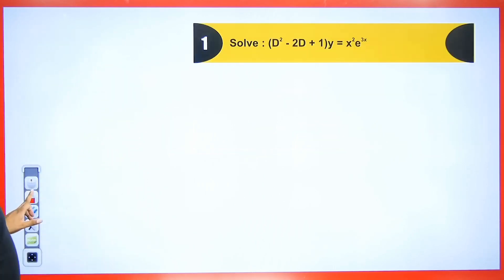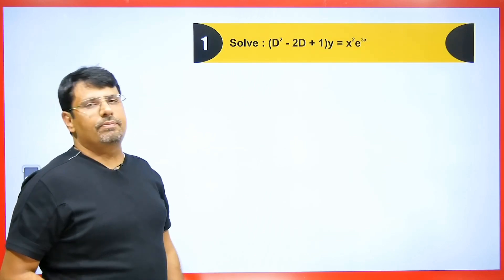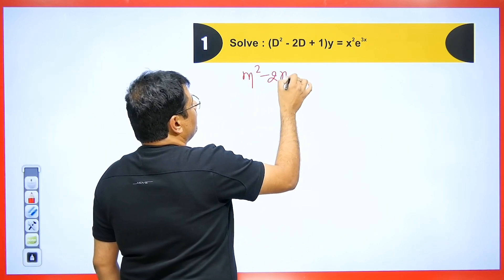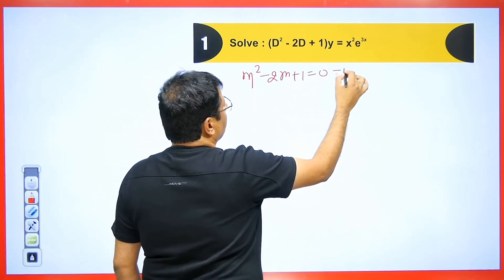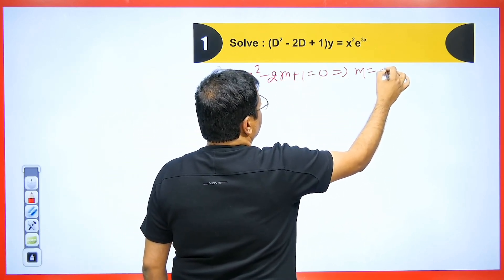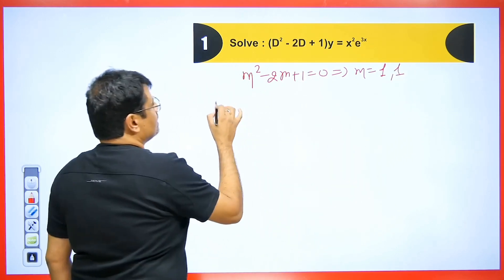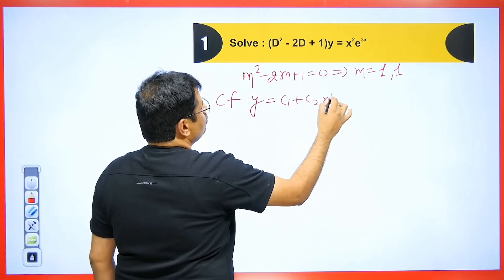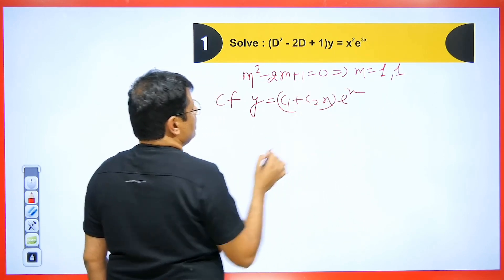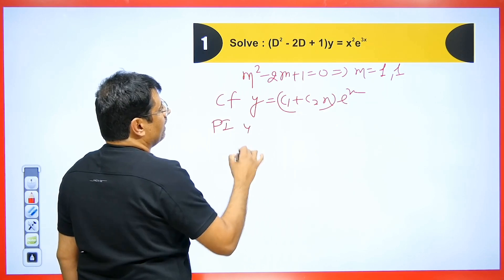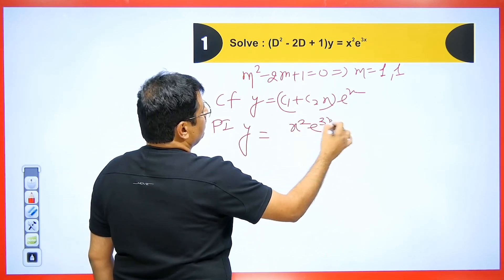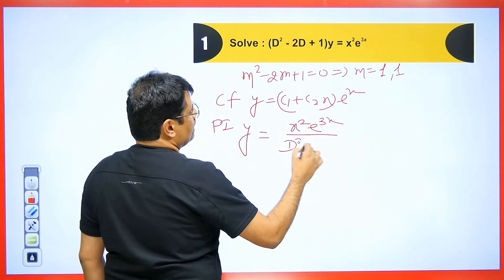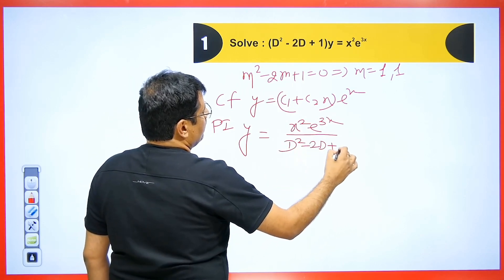Now let's look at this question. We are given D squared minus 2D plus 1. To find the CF, we get m squared minus 2m plus 1 equals 0, giving m equals 1 and 1 (repeated roots). Thus the CF will be y equals c1 plus c2·x times e to the power x. Then we find the particular integral.